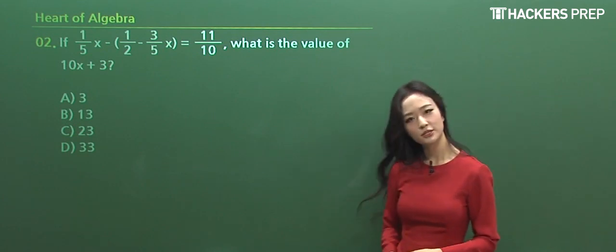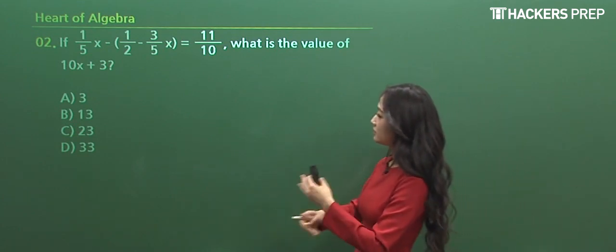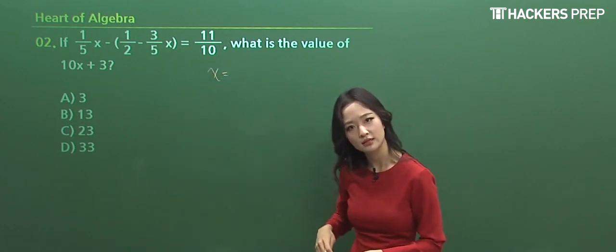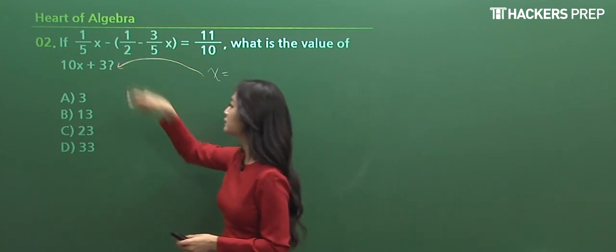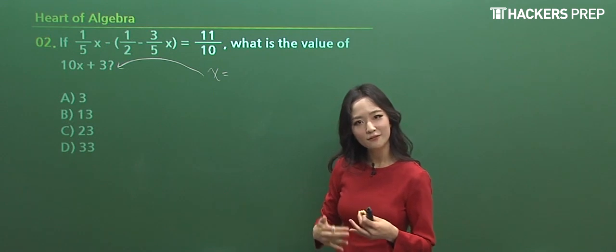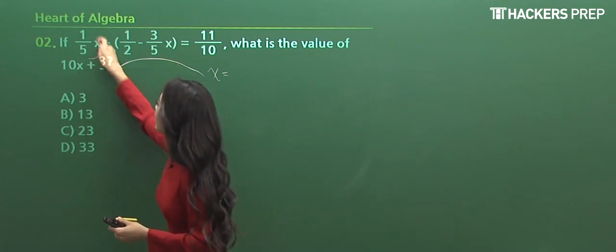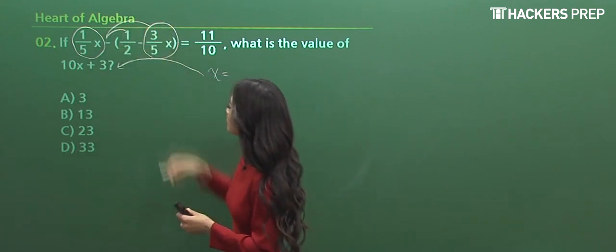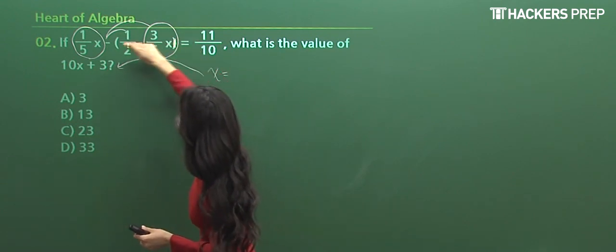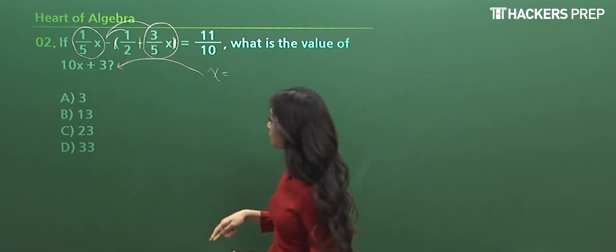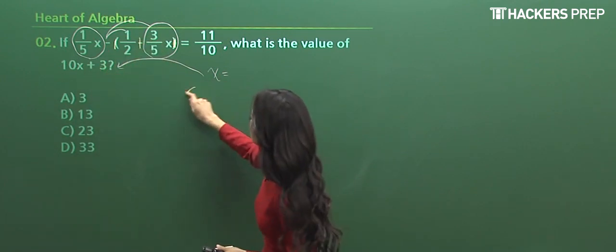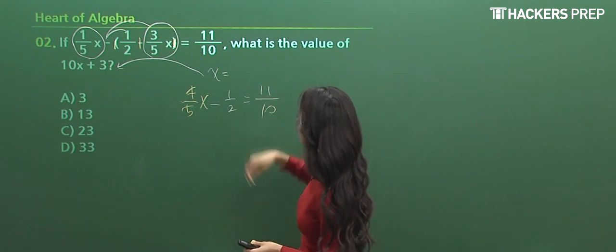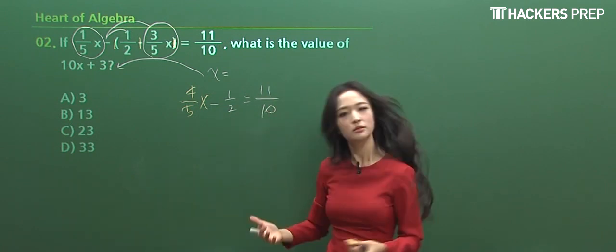So if we look at the question number 2, what did they tell us? If a basic given fact is here, what is value of 10x plus 3? Notice how they're not asking for the simple value of x. Rather, they're applying it to a further expression of 10x plus 3. So in this case, I don't really like fractions, and I think it's the same for you guys. So what I did was I combined the two terms on the left-hand side. So notice how you distribute the negative for both sides. So let's get rid of the parentheses here. So it becomes a negative 1/2 and then a positive 3/5. So when you add the two, it becomes 4/5 of x, and the 1/2 remains as it is, and the right-hand side value just remains as 11/10. So what do you do from this point on?